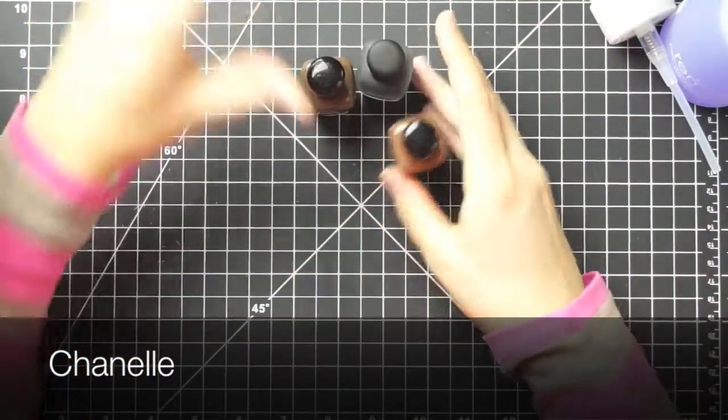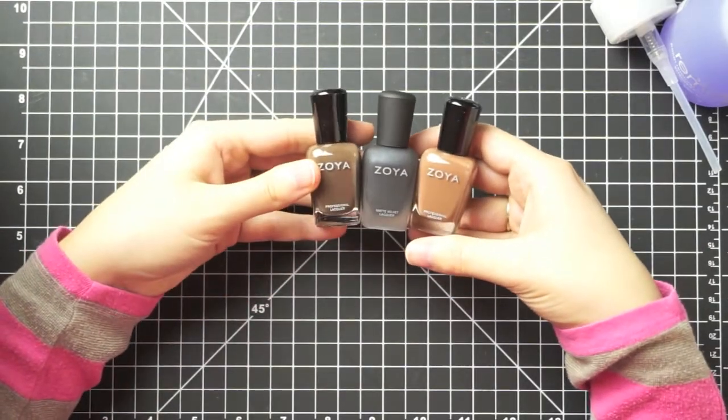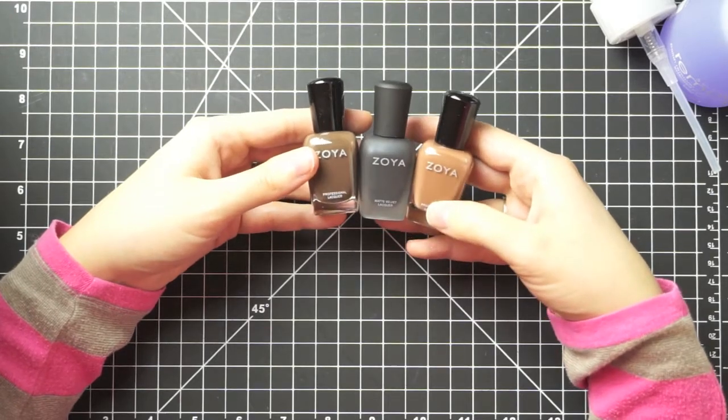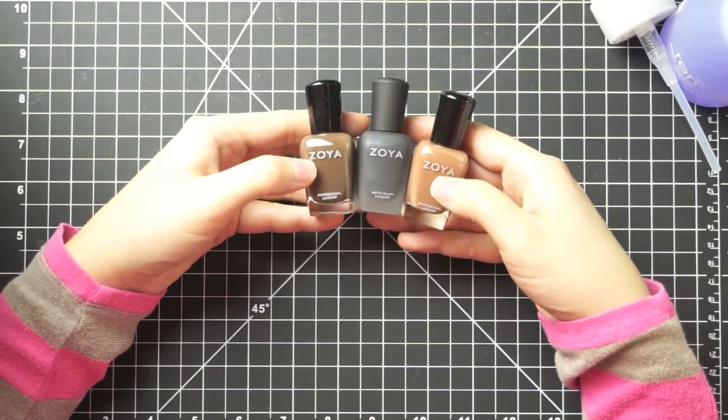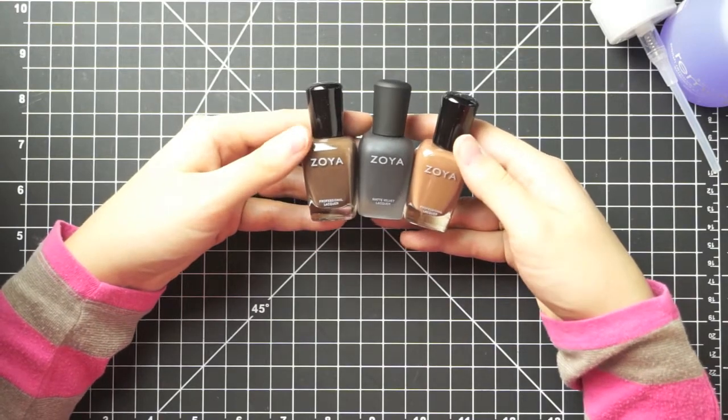And the other color I got is a lighter brown and this one is called Chanel. So like I said all these colors are darker more neutral colors that are probably better for fall and winter but I just really like brown nail polishes. I think they work really good with my skin tone. I think these ones are from their natural or their natural 2 collections. I really liked them.